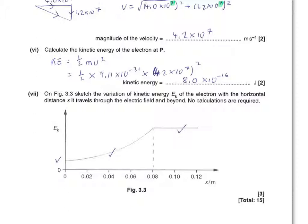Now, in the final part of this question, you're asked to plot how the kinetic energy of the electron varies with the horizontal distance travelled through the electric field and beyond. The numbers on the x-axis are important for you to notice and respond to. 0.08 metres is the point at which the electron leaves the electric field due to the parallel plates. So, what do we know about the kinetic energy as it enters the plates? Well, it had an initial velocity, so it has an initial kinetic energy. And you must start your graph with a non-zero value.